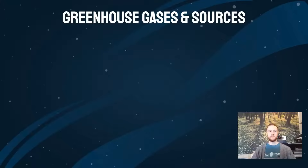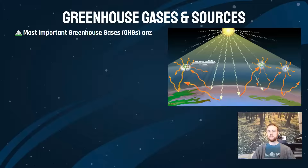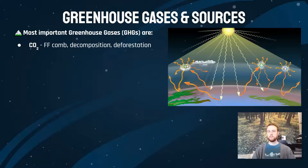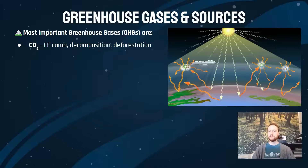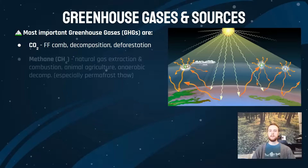Now let's look at different greenhouse gases and their sources. Carbon dioxide is probably the most critical because it's being emitted in by far the greatest amount, and it serves as a benchmark by which we measure all other greenhouse gases. Major sources of carbon dioxide are fossil fuel combustion, decomposition of organic matter, and deforestation — remember that trees can't sequester carbon dioxide after we cut them down.